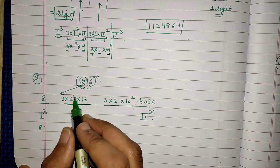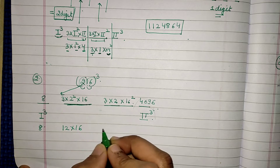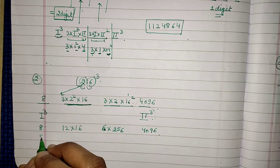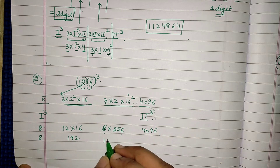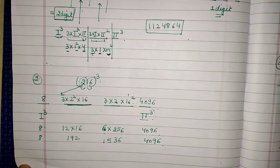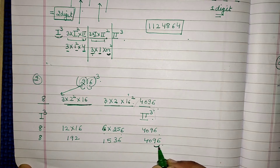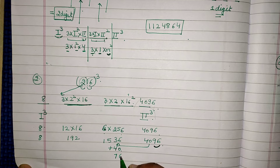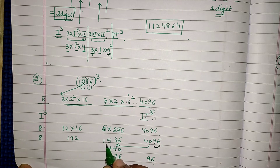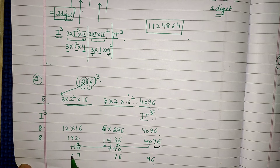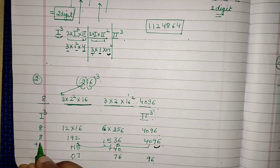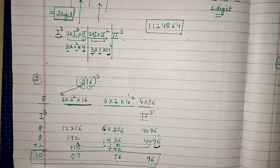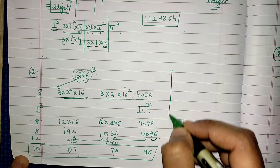3 × 2 × 16² = 3 × 2 × 256 = 1536. So the four parts are: 8, 192, 1536, 4096. Remember, only two digits are allowed per place, so remaining digits carry over. 4096 stays as 96, carry 40; 1536 + 40 = 1576, keep 76, carry 15; 192 + 15 = 207, keep 07, carry 2; 8 + 2 = 10. Final answer: 10,077,696.